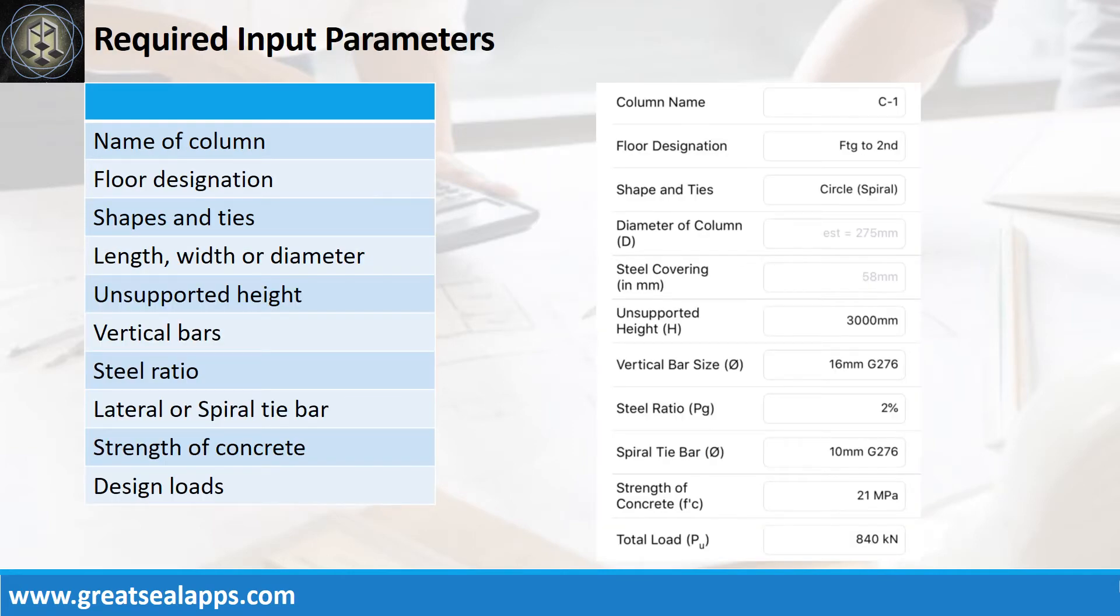Enumerate input parameters required. Column name, C1. Floor designation, footing to second. Shapes and ties: Circle, spiral. Unsupported height, 3000 mm.